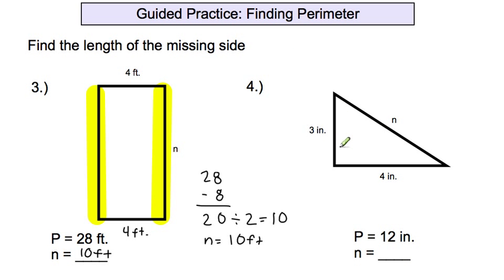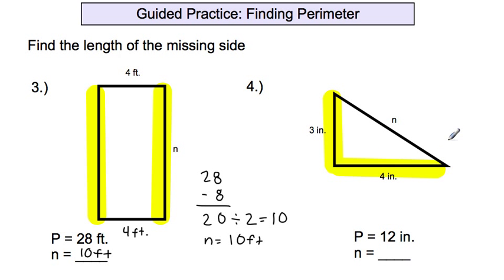On the next problem, we're finding a missing side again. We know the total perimeter of this triangle is 12 inches, and we have a side of 4 and a side of 3. Combine what we know: 3 plus 4 is 7. Take the total and subtract the parts: 12 minus 7 equals 5. So n equals 5 inches.